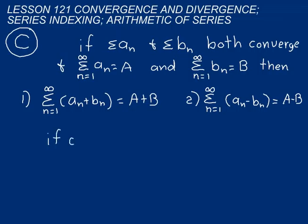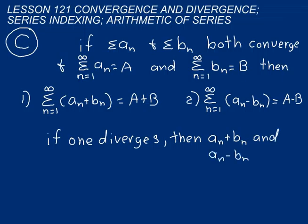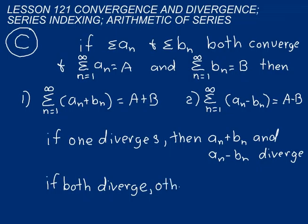Now something else about these is that if just 1 diverges, then a sub n plus b sub n and a sub n minus b sub n, both diverge. So we're talking about the series there. I didn't write all the summation symbology down. But if just one of those series diverges, then the sum of the two or the difference of the two, both of those diverge. Now if both diverge, they could actually converge if they cancel each other out. Other tests are necessary to determine convergence and divergence. So just keep that in mind.